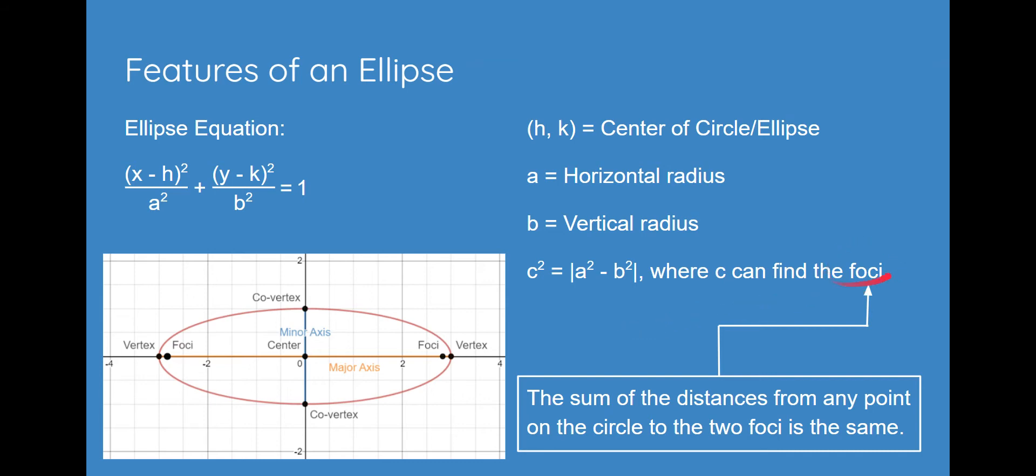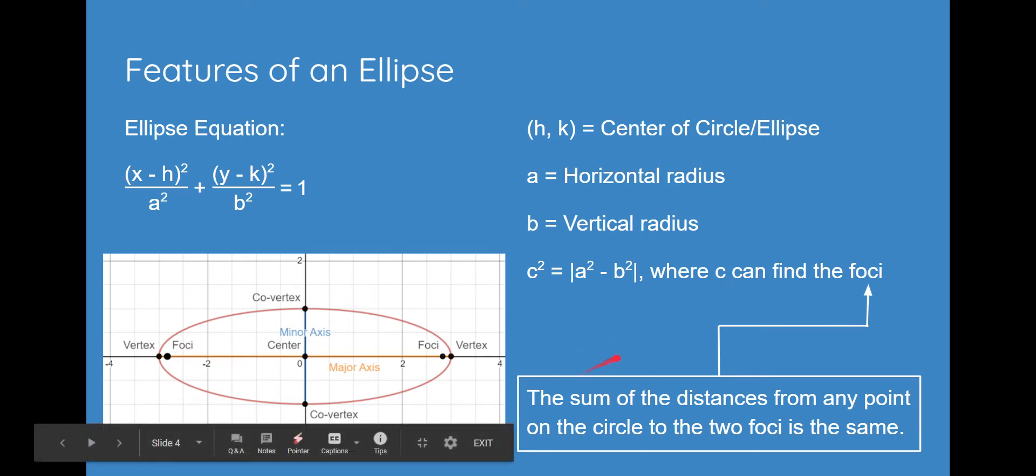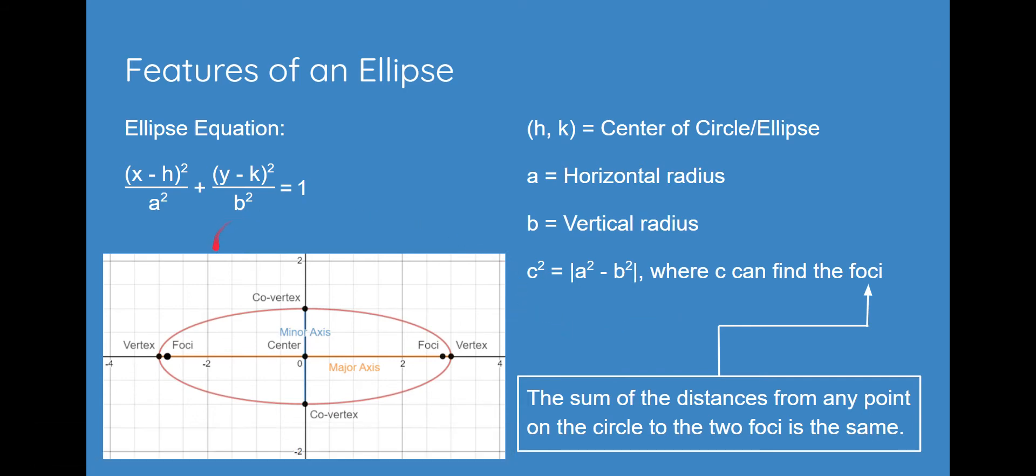And the foci, if you do not already know, is where the sum of the distances from any point on the circle to the two foci is the same. There will be a demonstration on the next slide. And also, here is just a picture for you to visualize where all these points will be.